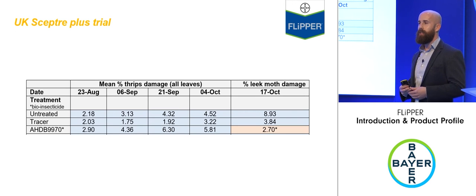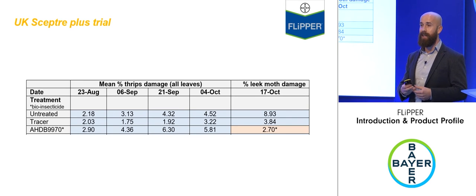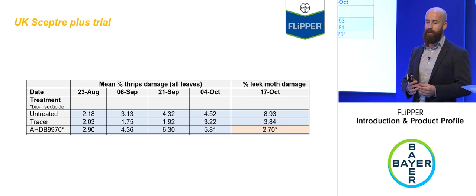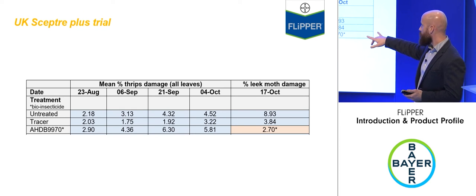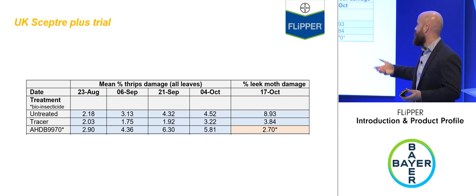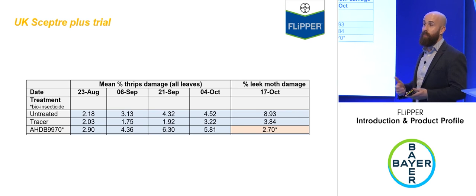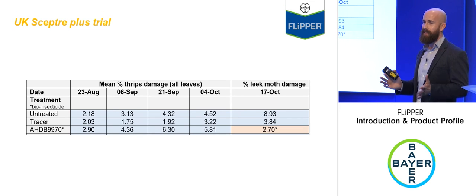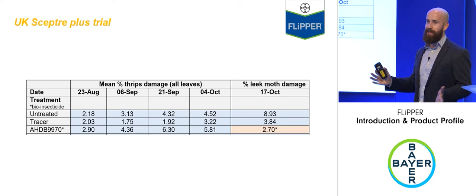Work with the HDB and the SEPTA Plus program over the past couple of years has produced good results and promising feedback, and that relationship is continuing this year. In a leeks thrips trial, the results were mixed, but there was really good activity on leek moth control — building on the story that Flipper is a genuinely broad-spectrum insecticide, and there's still a lot to learn about its activity on different pests.